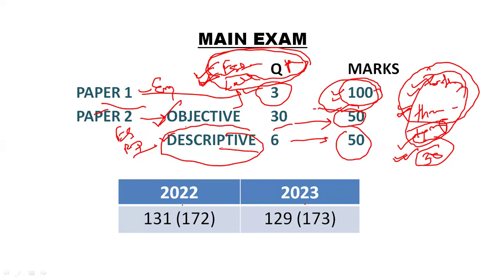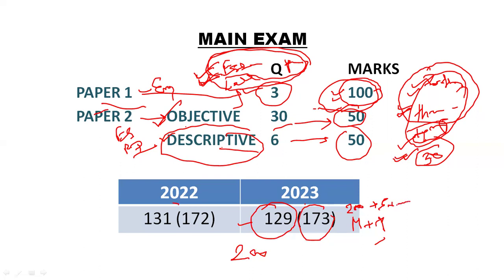The cutoff of your mains examination this year was 129 out of 200, and the final cutoff was 173 out of 250 — that is mains plus interview. Mains is 200 marks and interview is 50 marks, making a total of 250. Last year it was 172 final, with 131 in mains. So this year's 173 final and 129 in mains is almost similar to last year.